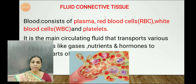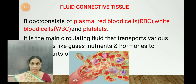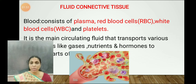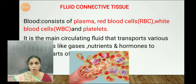Now what are the components of blood? Blood consists of plasma, which is the fluid part; it consists of white blood cells; it consists of RBCs, that is the red blood cells; and the platelets. So these are the components or composition of blood: plasma, RBCs, WBCs, and platelets.